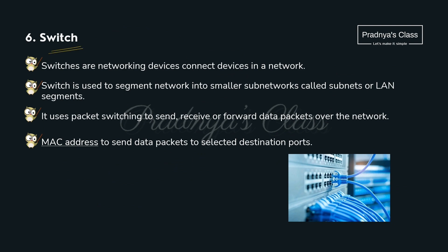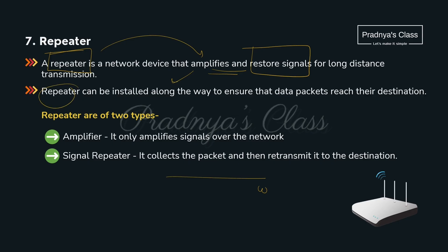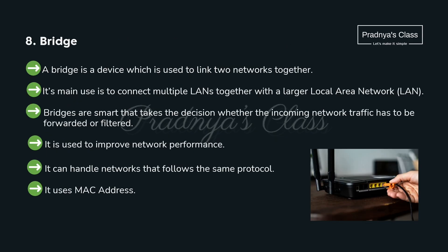The next important network device is the switch. It is just like a hub but is called a smart hub, and it is used to connect devices over a network. The next device is a repeater. Over a long distance, signals get weakened, so we need repeaters. Repeaters amplify and restore the signals, and for that purpose repeaters are installed along the way.